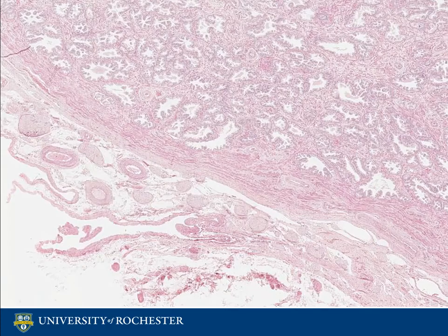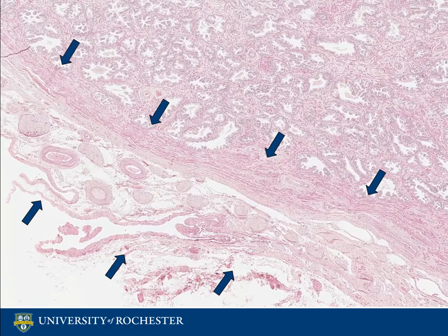You can see here that the outermost area of the prostate, or the capsule, is a thin layer composed of connective tissue, and it contains some smooth muscle fibers, blood vessels, and nerves.